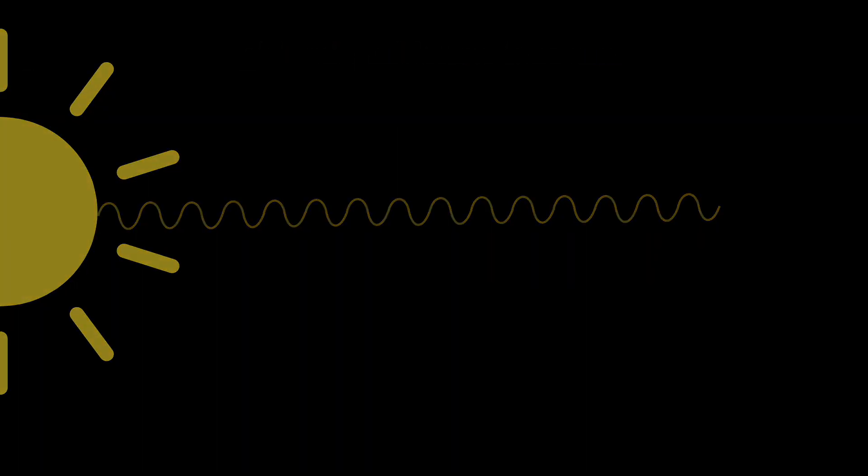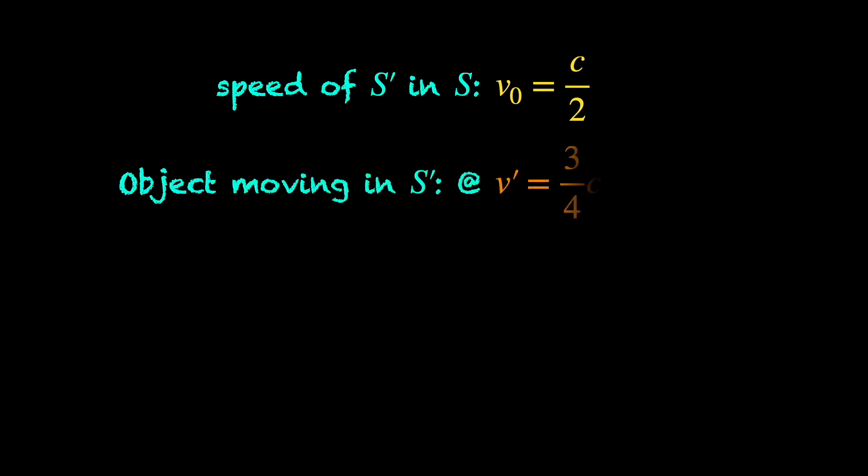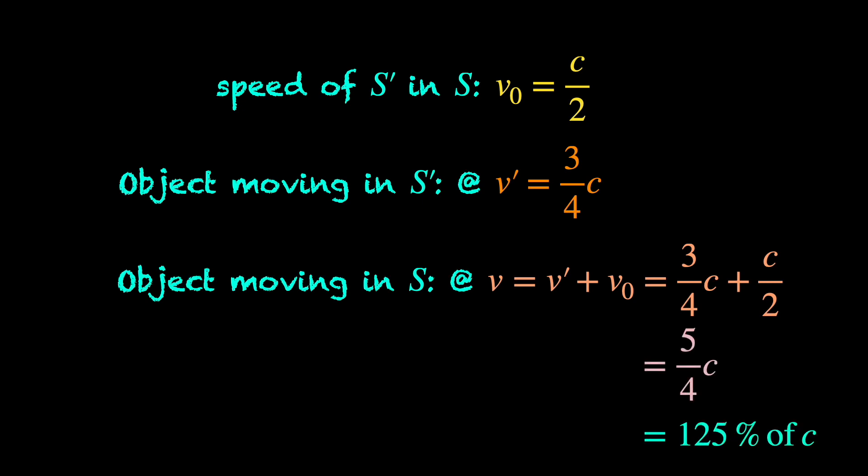Can this help us observe an object surpassing the speed of light? All we need is a frame S' which is moving with respect to our S frame at say half the speed of light, so V0 is C by 2 and some object moving with 3 fourth the speed of light with respect to this S' frame, that is V' is 3 fourth of C. Should the two add up as per the velocity addition rule, we in our S frame should see the object move 25% faster than light. Sadly, this plan does not work.